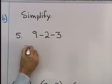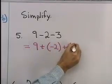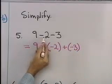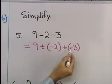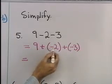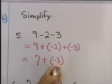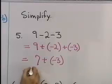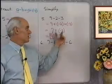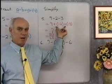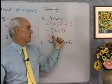Let's write this as 9 plus negative 2 plus negative 3. Instead of subtracting 2, I change to addition of the opposite. Instead of subtracting 3, I change to adding negative 3. Now, 9 plus negative 2 is 7, plus negative 3. 7 plus negative 3 is 4. So I do my subtraction by thinking in terms of addition — even if I don't write this step, I still think this way.